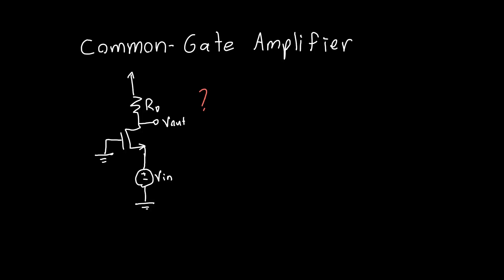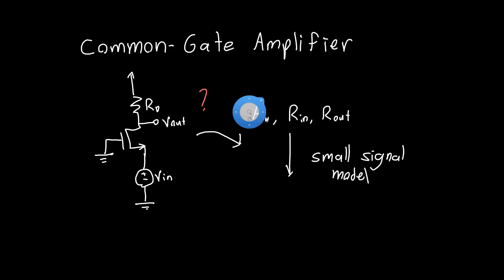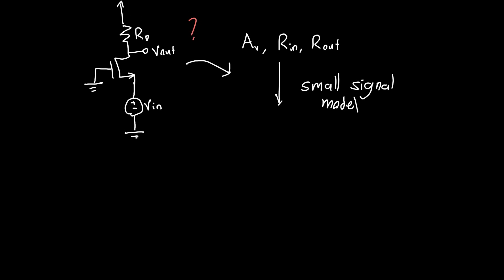Despite its awkward looking nature, we can just analyze this circuit like any other. The three quantities of interest are the voltage gain, the input resistance, and the output resistance. How do we go about calculating these? We just use our small signal model. When in doubt, just draw the full small signal model and you'll never go wrong.